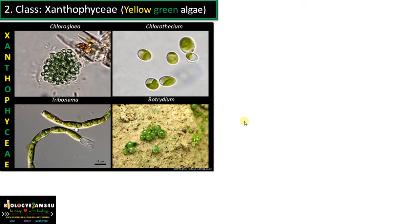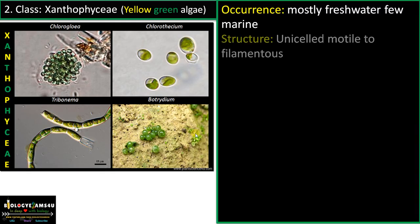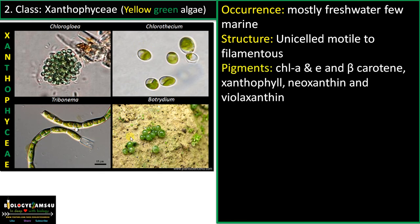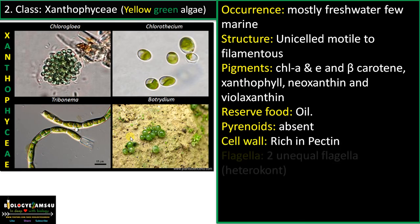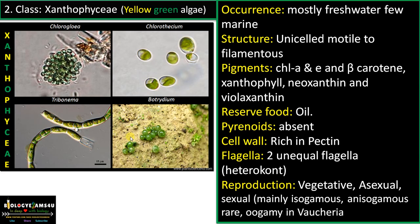Class 2 is Xanthophyceae, the yellow-green algae. They are mostly freshwater, rarely marine, ranging from unicelled motile to filamentous forms. Pigments include chlorophyll A and E, beta-carotene, neosanthine, and vaucheriasanthin. Reserve food is oil; pyrenoids are absent. Cell wall is rich in pectin. Flagella are two unequal flagella (heterocont). Reproduction is vegetative, asexual, and sexual — mainly isogamous, rarely oogamous (oogamous in Vaucheria). Examples include Chlorothesium, Tribonema, and Botrydium.